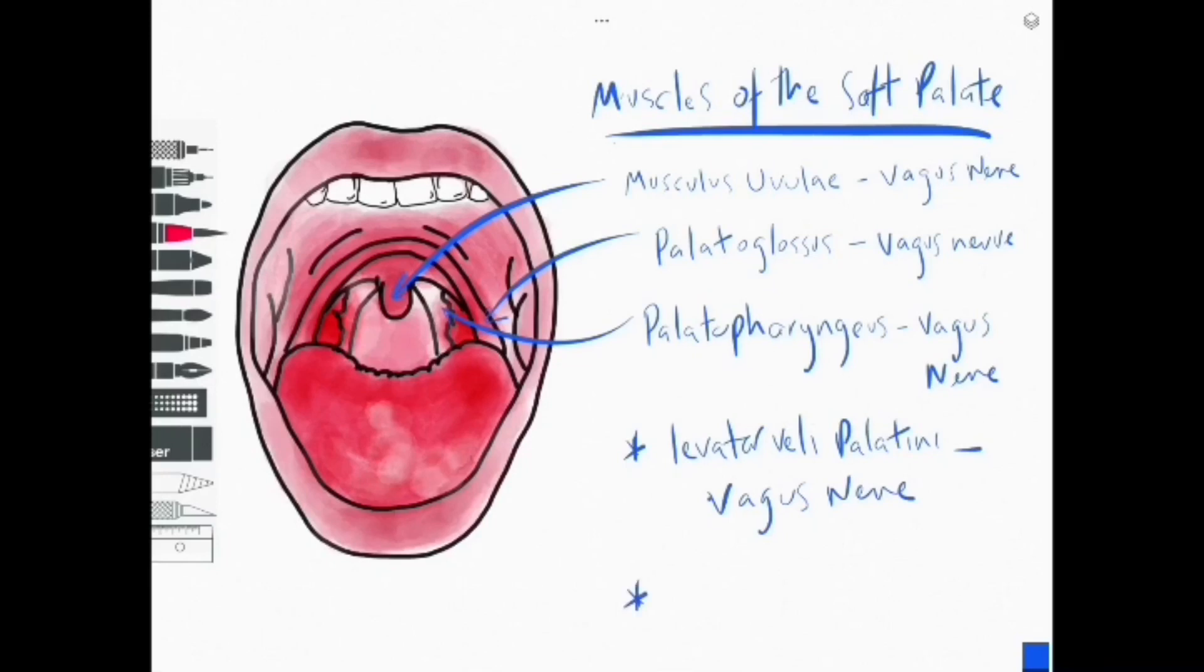Now a muscle not seen on this diagram is the levator veli palatini muscle. It's innervated by the vagus nerve and is the only muscle to elevate the soft palate above the neutral position.